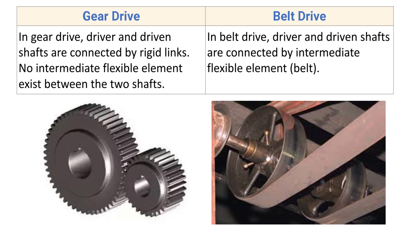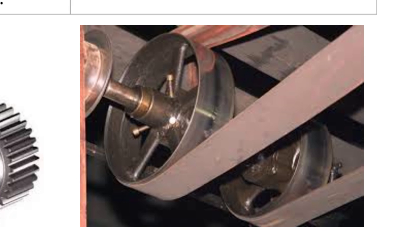In belt drive, driver and driven shafts are connected by an intermediate flexible element, that is the belt. The two elements are connected together by means of a flexible element known as belt, and hence it is known as a flexible drive.